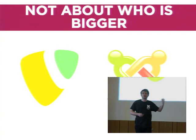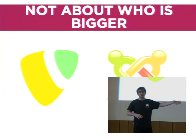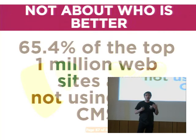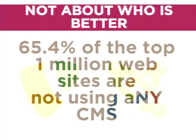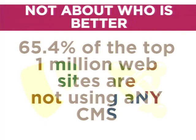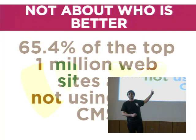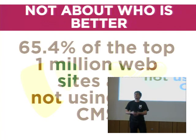It's not about who is bigger — whether Typo 3 or Joomla is bigger. In Germany, Typo 3 is bigger, but in the rest of the world Joomla is much bigger. But that's not important. What is important: 65.5% of the top million websites in the world don't use a CMS at all. That's the most important thing for me — to get all those people using a CMS. If they use an open source CMS, even better. There's a huge marketplace out there, and it shouldn't be about who's bigger or better between Typo 3, Drupal, Joomla, WordPress, or whatever.